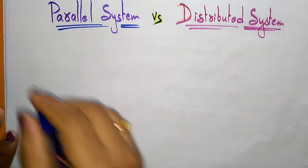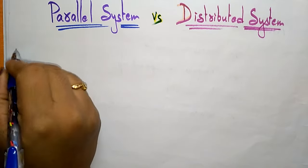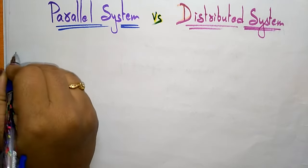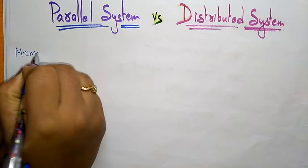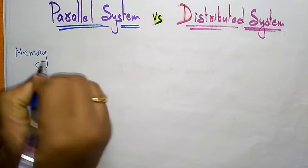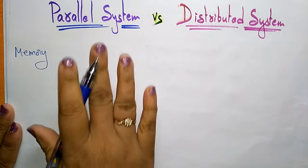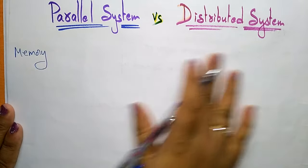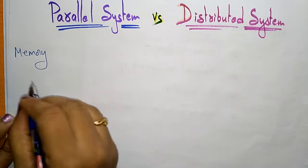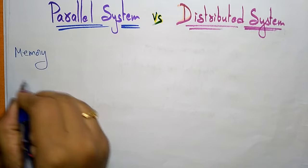Let us take some resources. If you take memory, what is the difference between the parallel system and distributed system? If you take the resource as control,